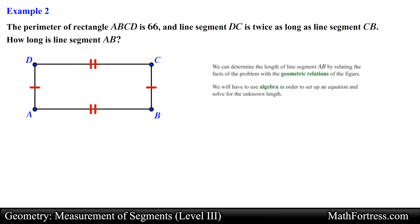From the figure shown, we know that line segment AD and line segment BC are congruent because both segments have matching single tick marks. In the same manner, line segment DC and line segment AB are congruent because both segments have matching double tick marks.